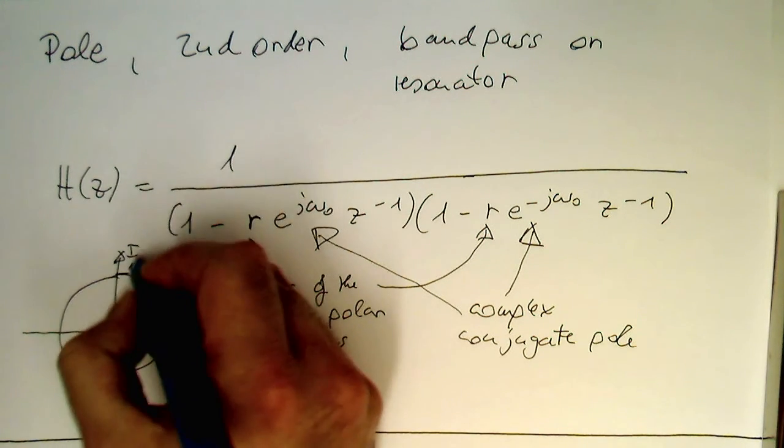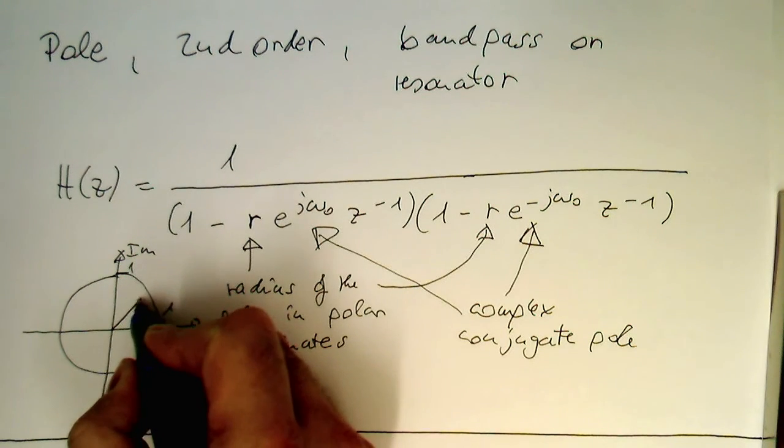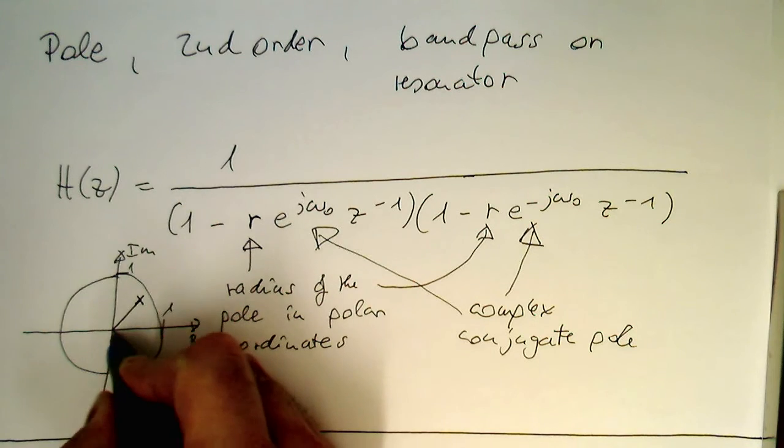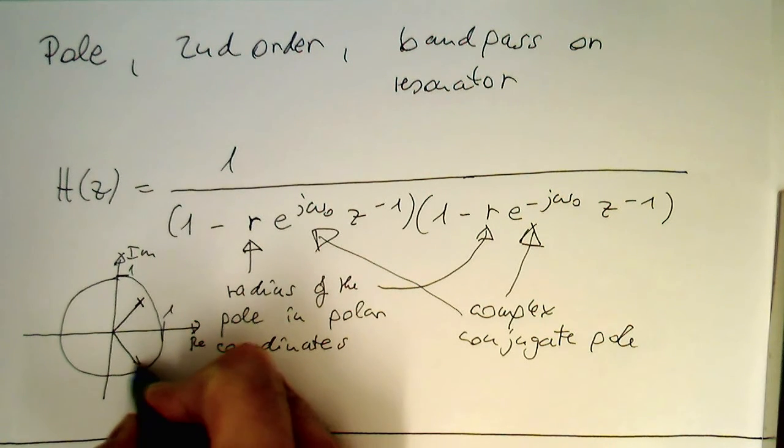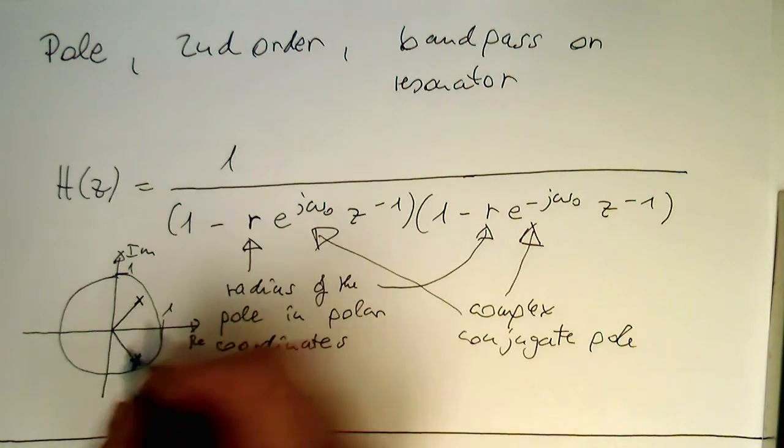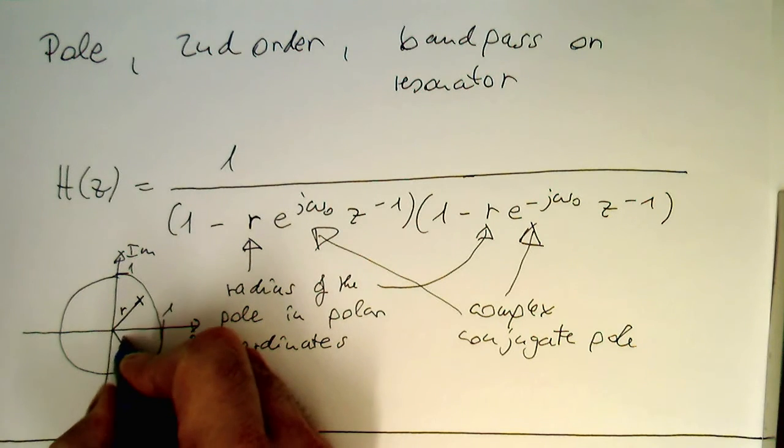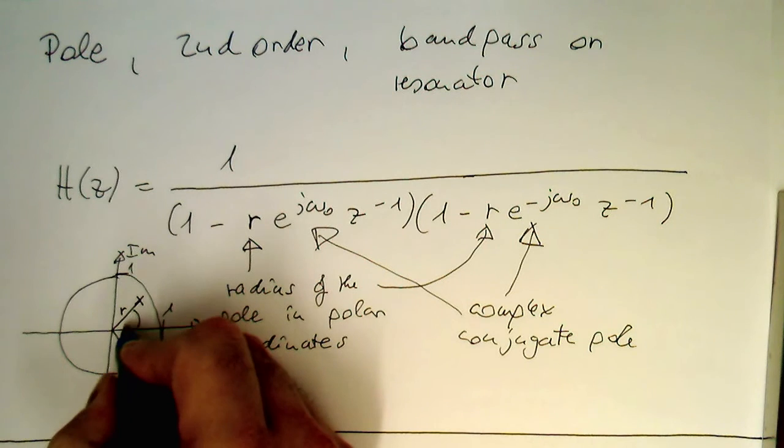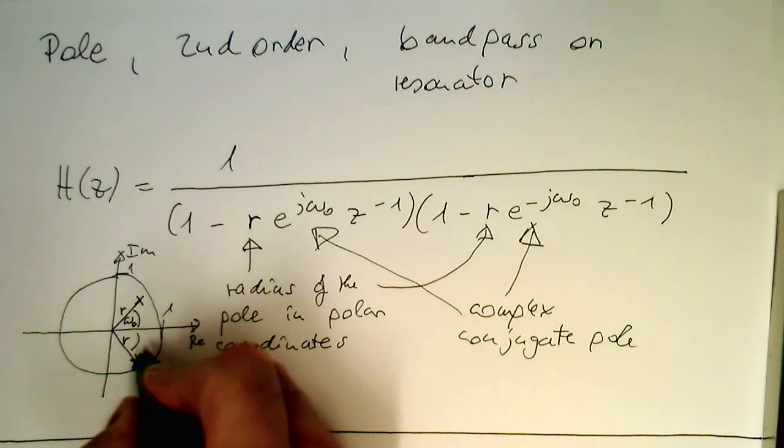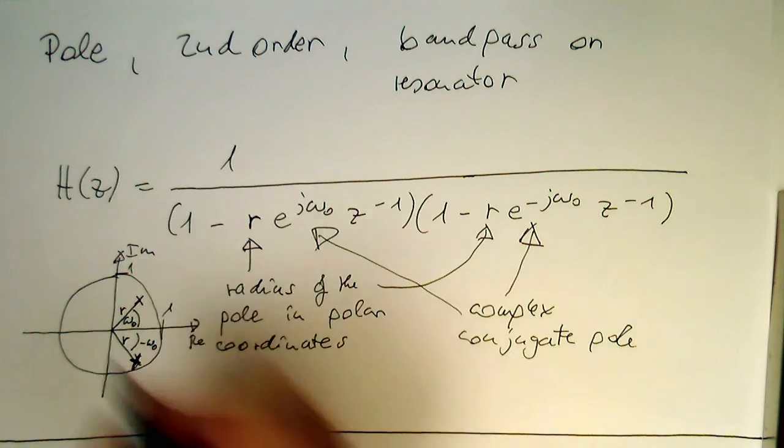And this is imaginary, that we now define a pole here, and a pole here. So that's our pole here, and that this is here our radius, and then we're defining here our angle omega zero, and this is here minus omega zero as this angle here.